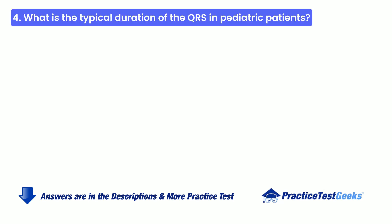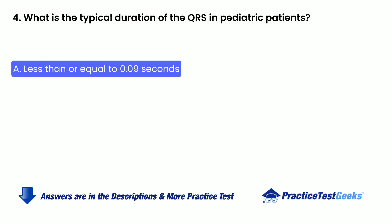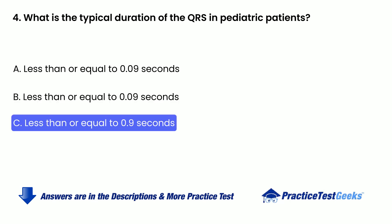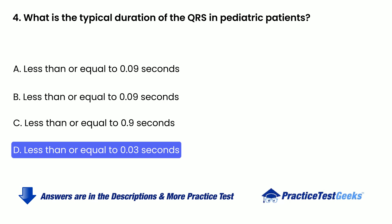What is the typical duration of the QRS in pediatric patients? A. Less than or equal to 0.09 seconds. B. Less than or equal to 0.15 seconds. C. Less than or equal to 0.9 seconds. D. Less than or equal to 0.03 seconds.